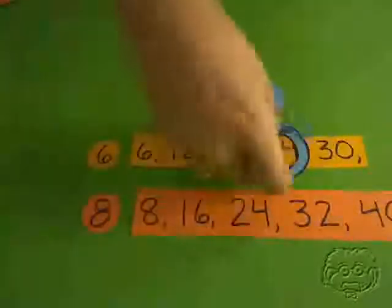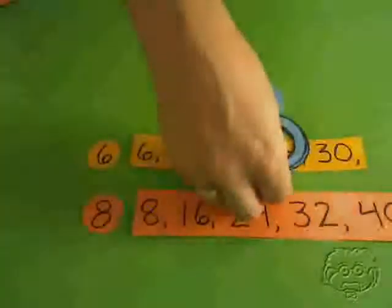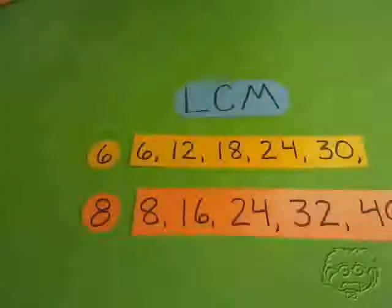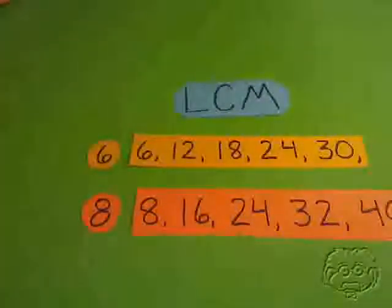So in some cases, the least common multiple will be the product of two numbers, and in some cases it'll be smaller than their product.